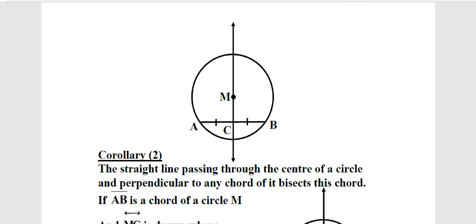Clarion number 2: The straight line passing through the center point of a circle and perpendicular to any chord of it bisects this chord. Look at the figure. We have a straight line L passing through the center point and perpendicular to the chord. The point at which this straight line is perpendicular to the chord is the midpoint of chord AB. Any straight line passing through the center point of a circle and perpendicular to a chord inside it also bisects that chord.